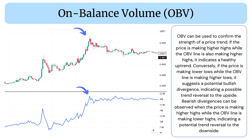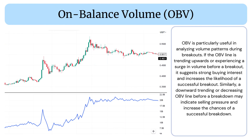Bearish divergences can be observed when the price is making higher highs while the OBV line is making lower highs, indicating a potential trend reversal to the downside. OBV is particularly useful in analyzing volume patterns during breakouts.